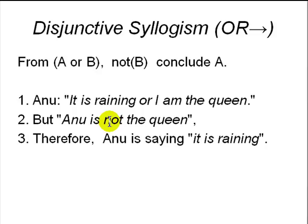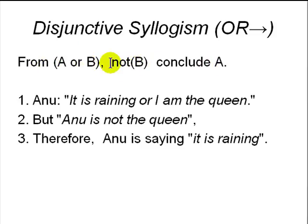We have many other forms of deduction. Disjunctive syllogism basically means: from 'A or B' and 'not B,' then A is true. We are given that A or B is true, and we know B is not true, so we can conclude A must be true. For example, Anu says 'it is raining or I am the queen,' but we know the second part is false — therefore it is raining.